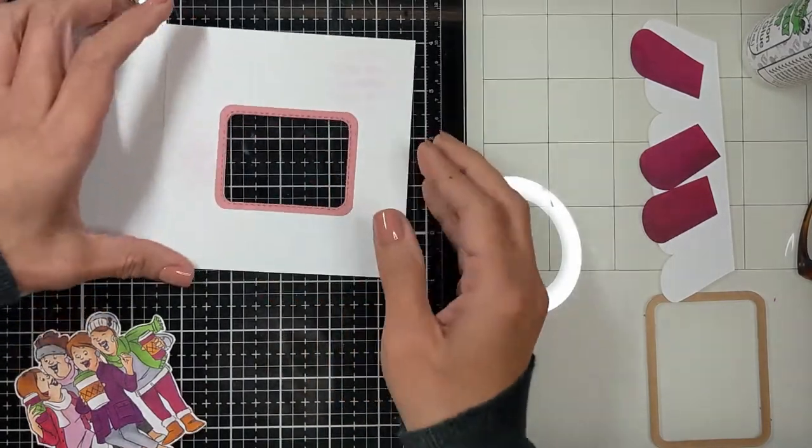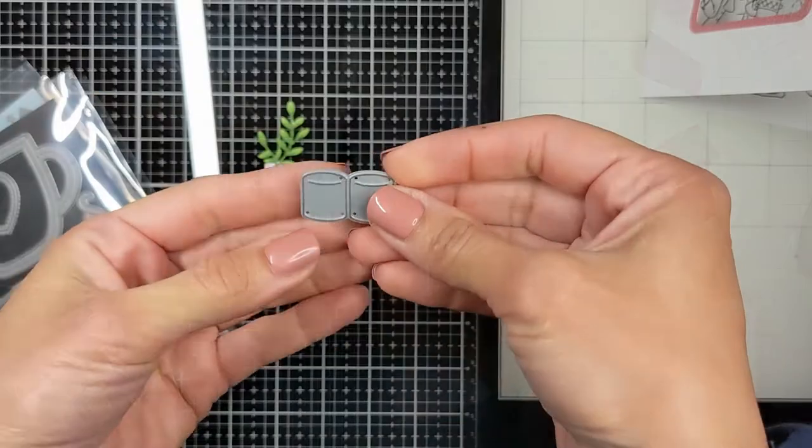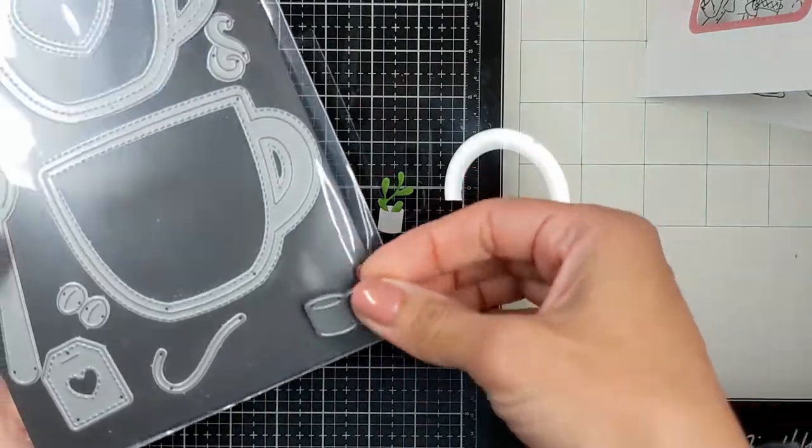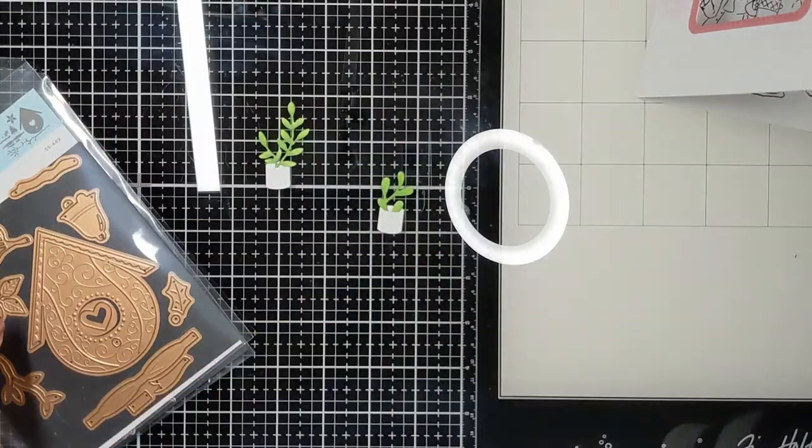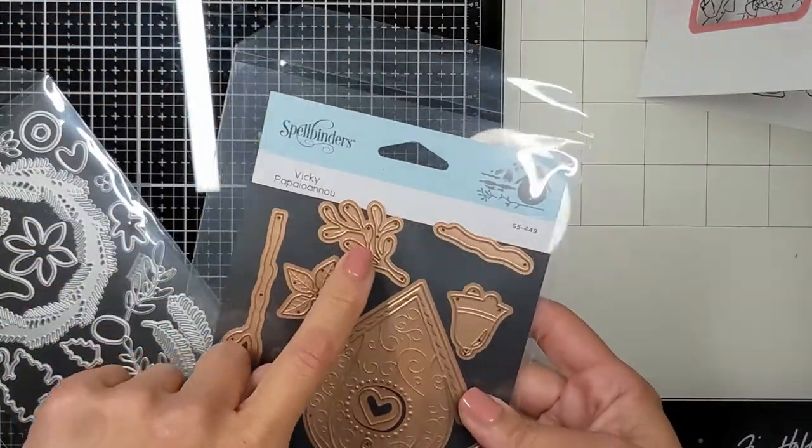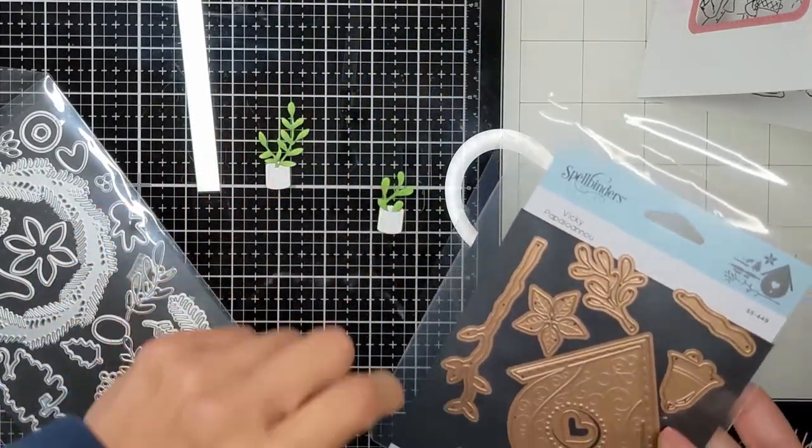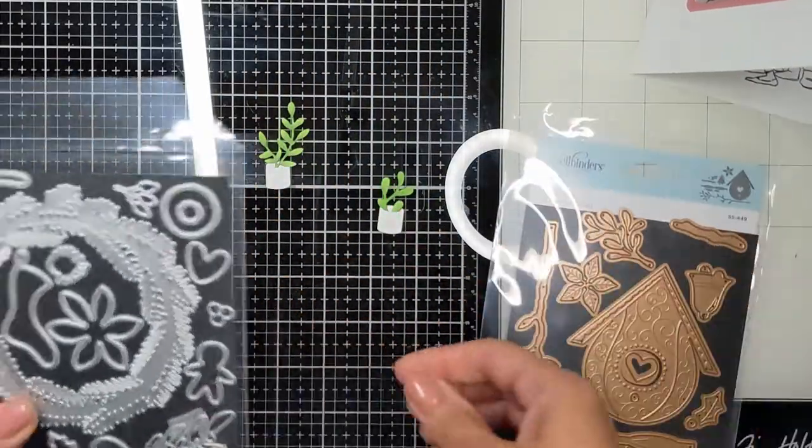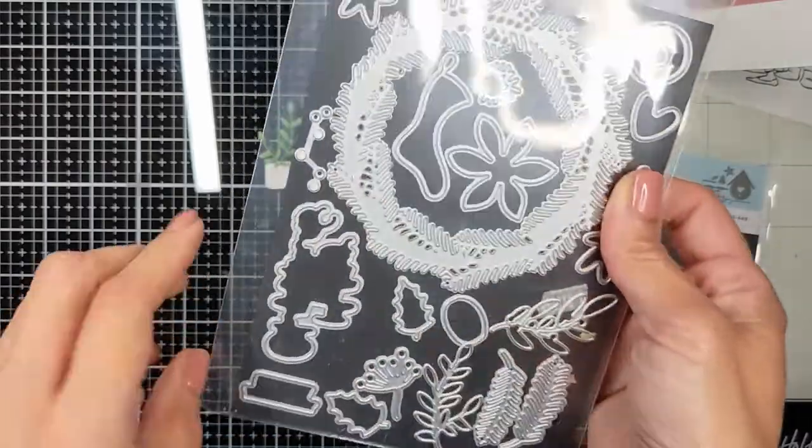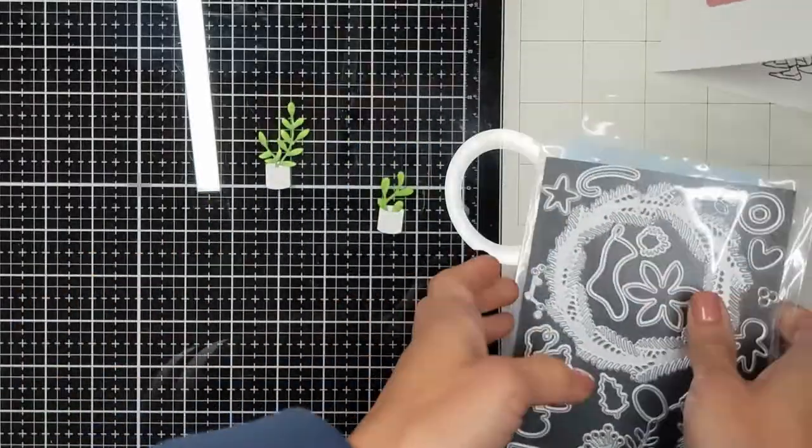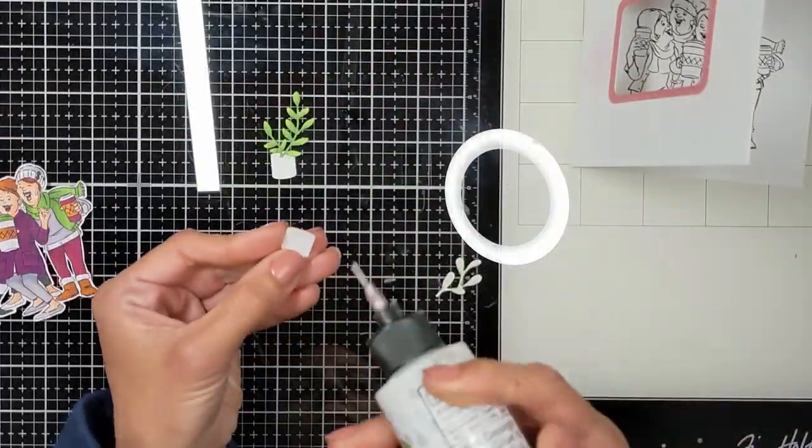To create the scene on the inside, I used this marshmallow die from the Cuff's die set from Lawn Fawn and these two leaves from different sets - one from Honey Bee Stamps and the other from Spellbinders.